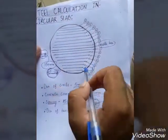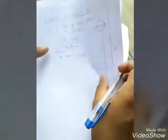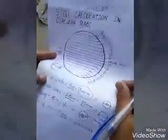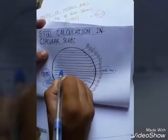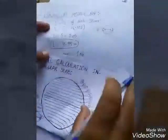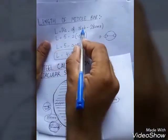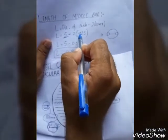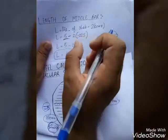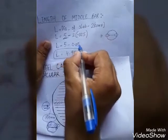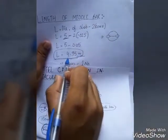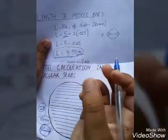Now let's find the length of each bar — middle bar first, then first through eighth. The length of the middle bar equals the diameter of slab minus two times the cover. Diameter is 5 meters, minus two times 25 mm equals 0.05 meters. So 5 minus 0.05 gives a length of 4.95 meters.